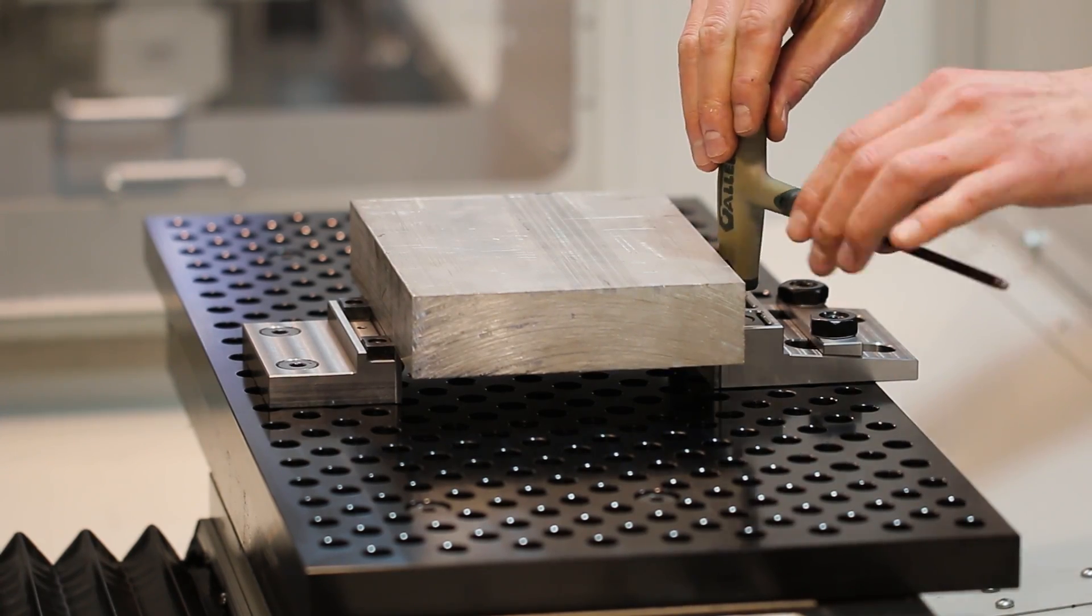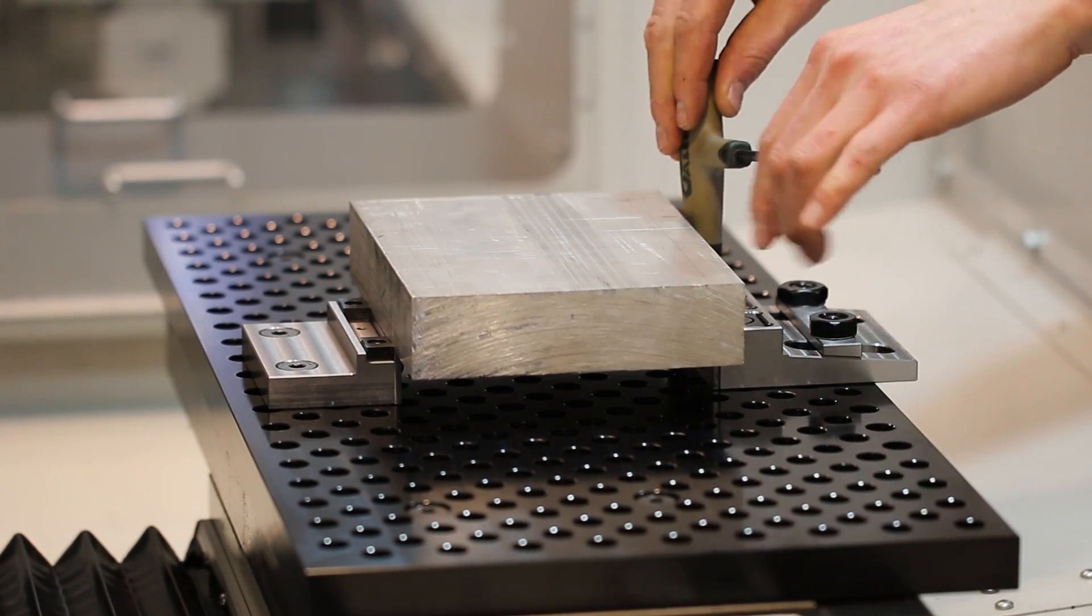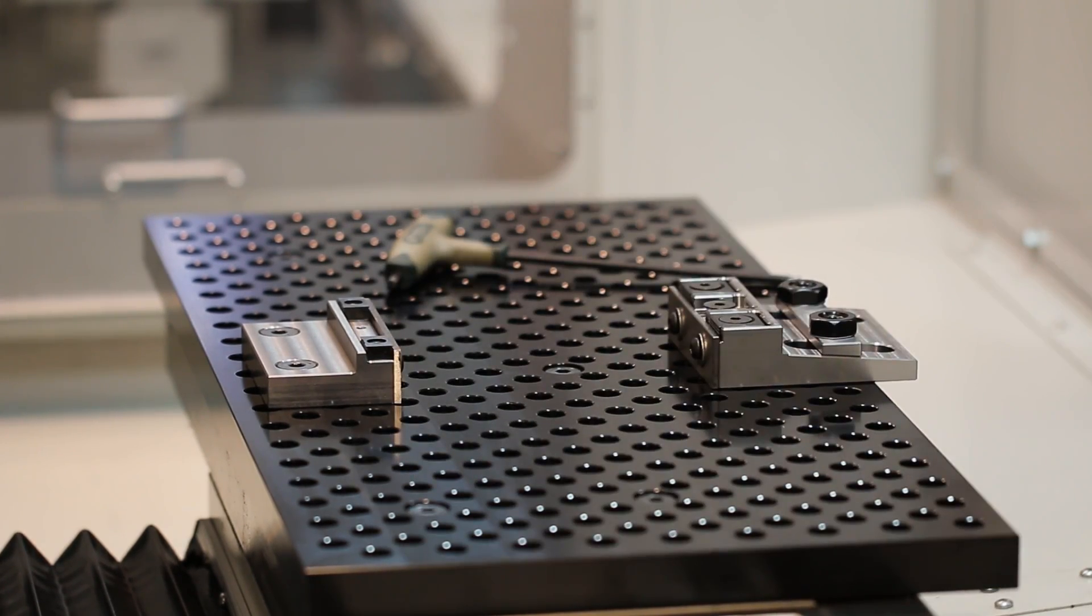When you're done, you can loosen your clamps. Pull your part out. If you're doing a batch, you can drop the next part right in and re-tighten down the tiny vises.